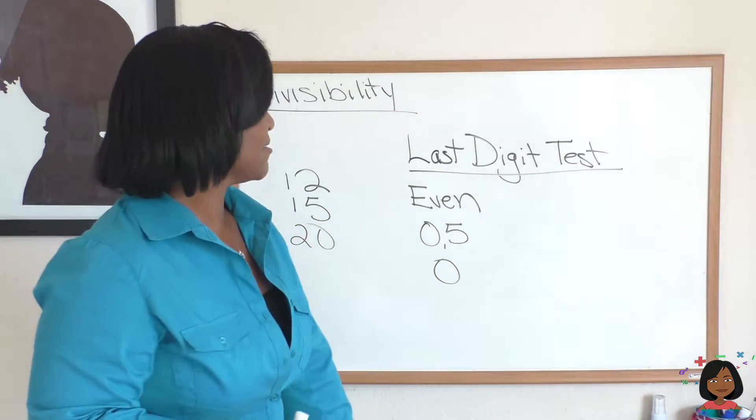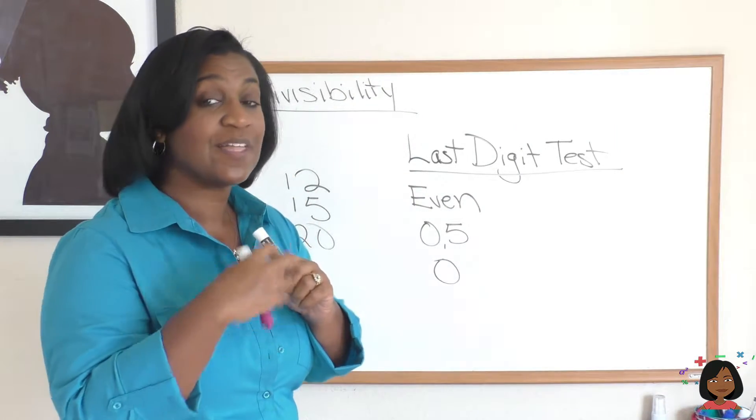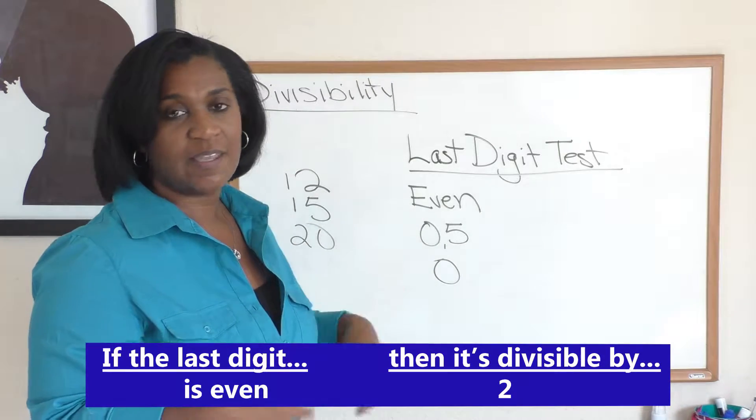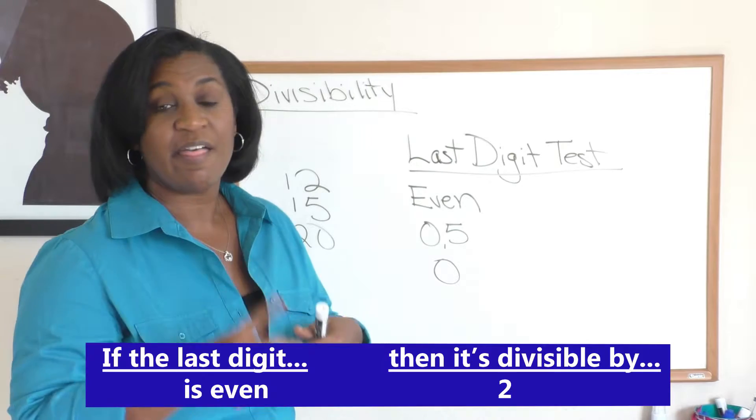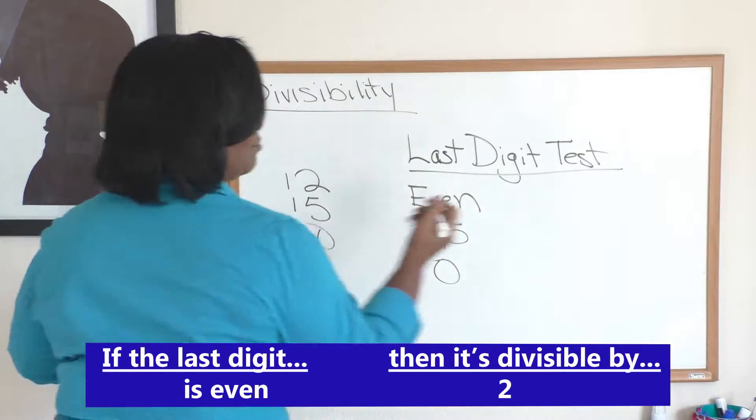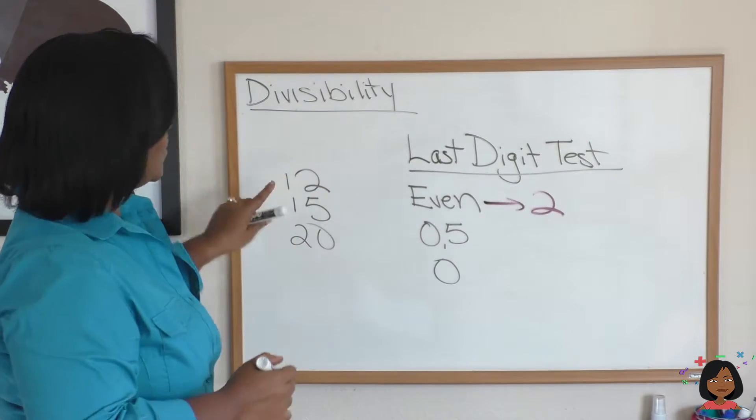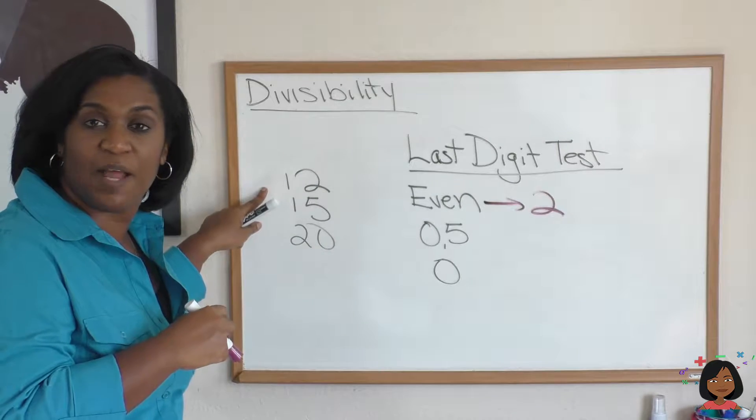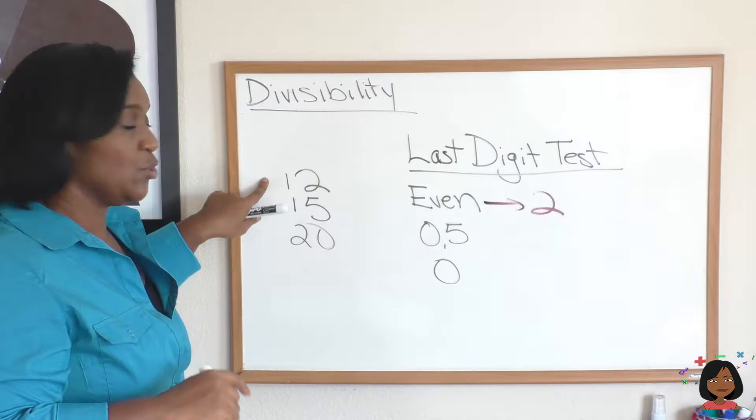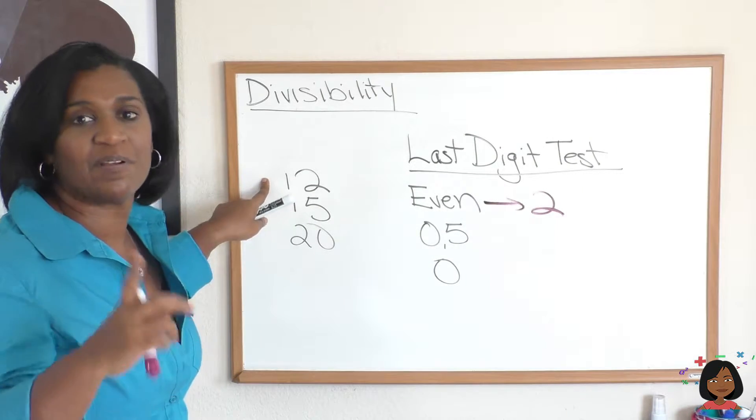The last digit test. So, we're going to look at the last digit of our number. And if the last digit of our number is even, meaning it ends in 0, 2, 4, 6, or 8, then that number is divisible by 2. Let's try it out on a few numbers. So, 12. Is 12 an even number? Yes, it is. That means it's divisible by 2. 2 divided into 12 is 6. So, any even number is divisible by 2.